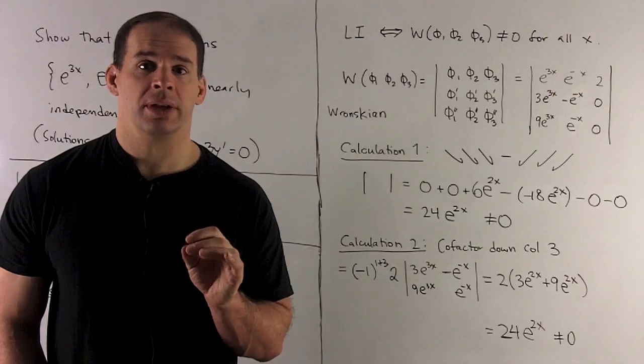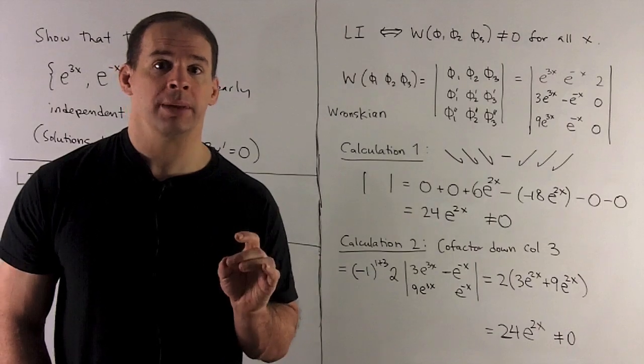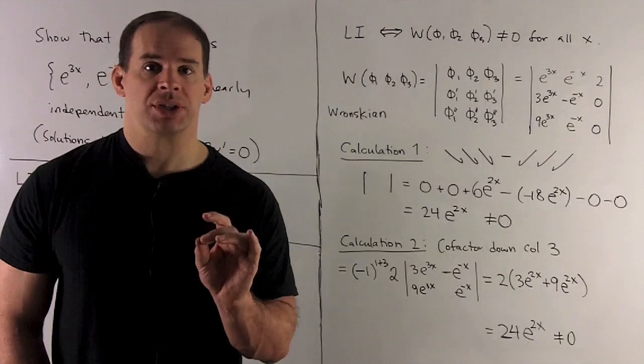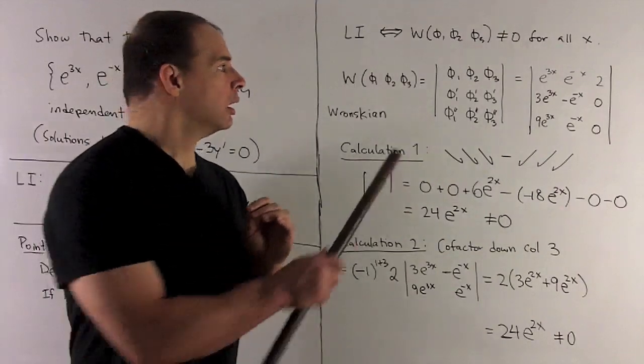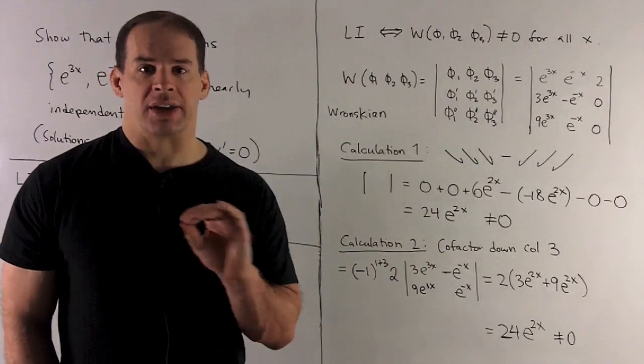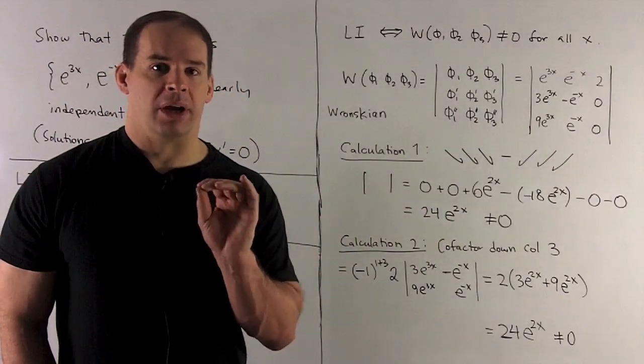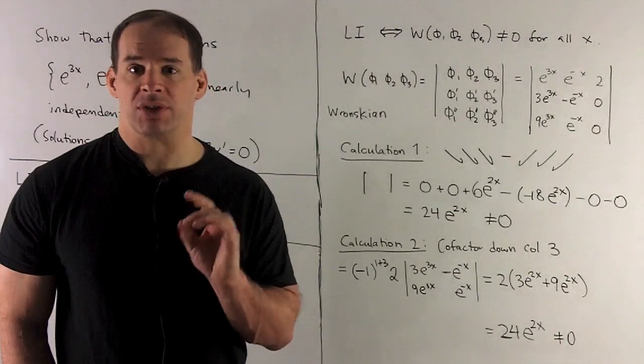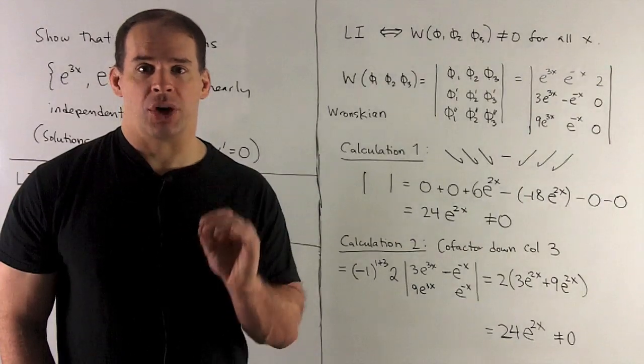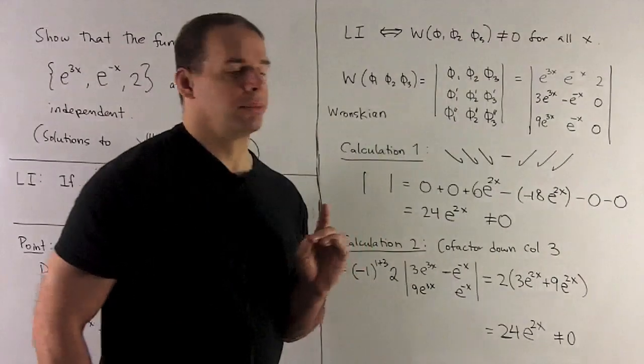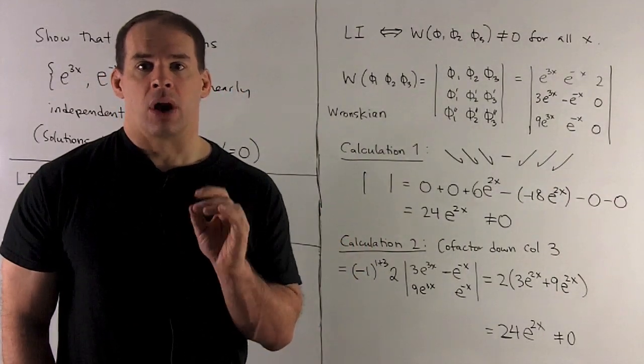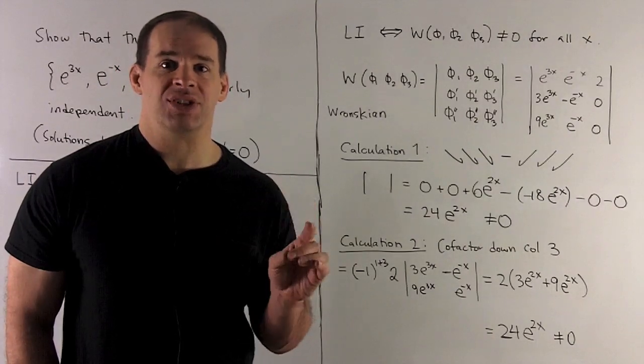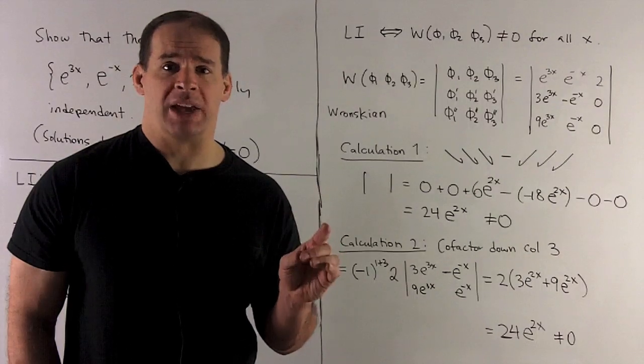To show the linear independence of n solutions of an nth order linear ODE, we use the Wronskian. The Wronskian is defined as we're going to form a matrix. I put our solutions in the top row, derivatives in the second row, second derivatives in the third row. If we have bigger order than 3 in this case, we would just keep taking derivatives until I have a square matrix. Then we take the determinant. The theorem I invoke, our set of solutions is linearly independent if and only if the Wronskian is non-zero, at the points where our solution space is defined.